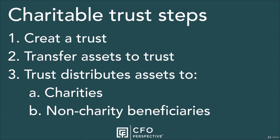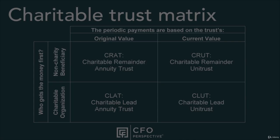Three: the trust distributes money over time to at least two beneficiaries — charities, which are the organizations you want to support, and non-charity beneficiaries. This may be your family or anyone else.